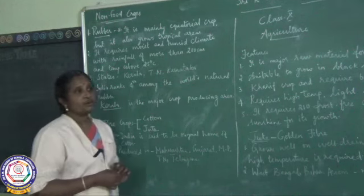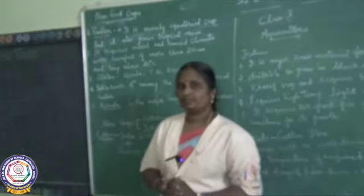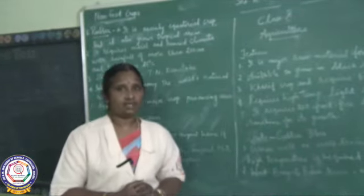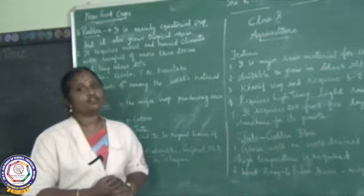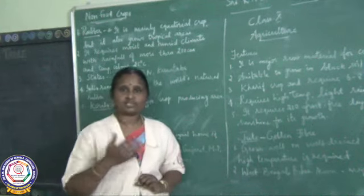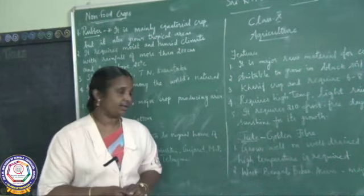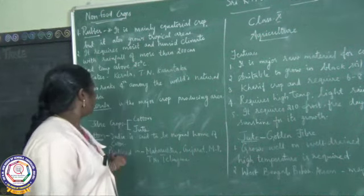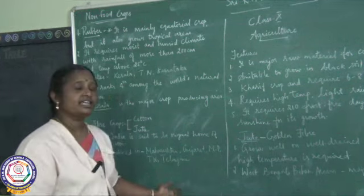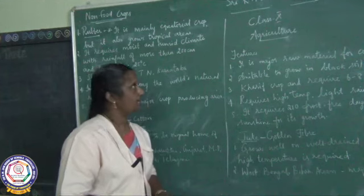Now the fiber crops we are going to study are cotton and jute. Cotton is an important raw material for cotton textile industries. It usually grows in black soil. India is said to be the original home for cotton. States producing cotton are Maharashtra, Gujarat, Madhya Pradesh, Tamil Nadu, and Telangana.